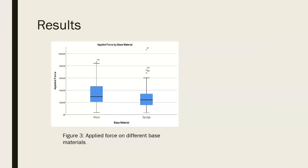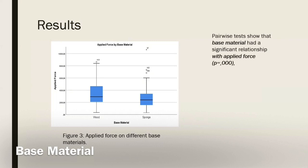For our results, we performed a MANOVA analysis with applied force, perceived applied force, duration, and perceived hardness as dependent variables, and base material along with surface material as independent variables. Multivariate tests show that there is a significant interaction between base material and all dependent variables and between surface material and dependent variables.